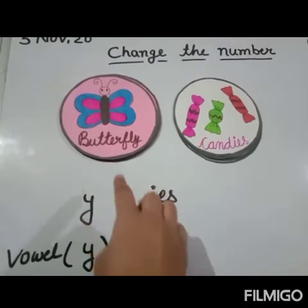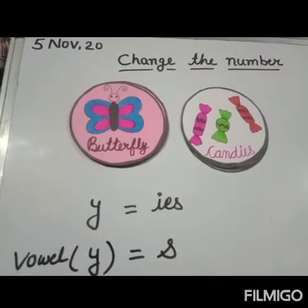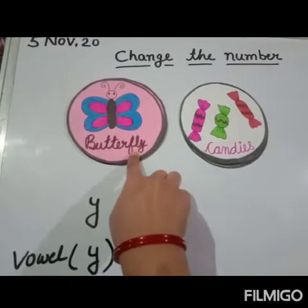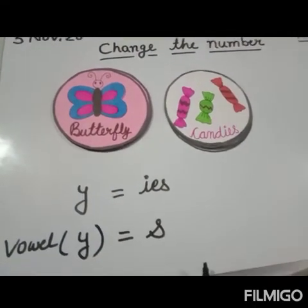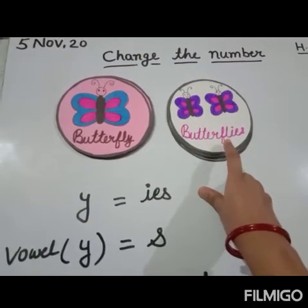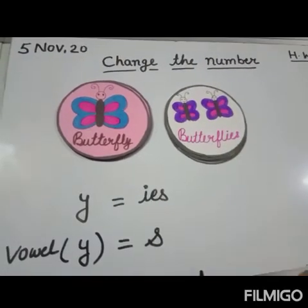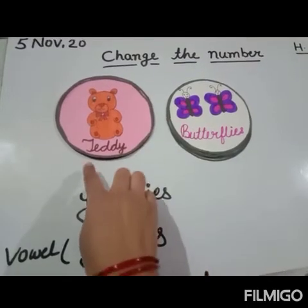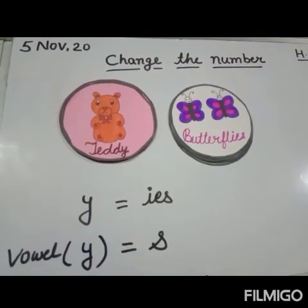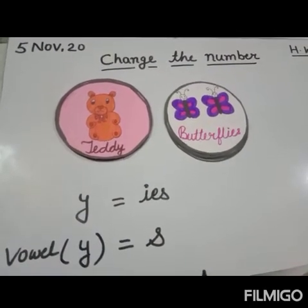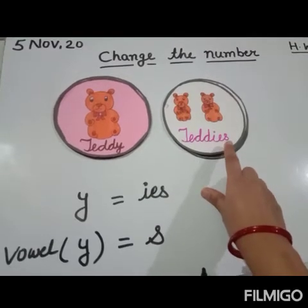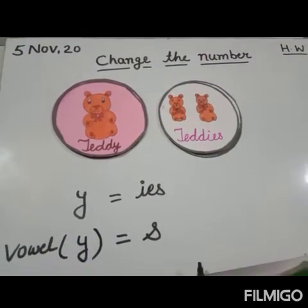Next is butterfly — B-U-double T-E-R-F-L-Y. Again, before Y there is a consonant sound, not a vowel sound, so we remove Y and add I-E-S. What does it become? Butterflies — B-U-double T-E-R-F-L-I-E-S. Next is teddy — T-E-double D-Y. Again, before Y there is a consonant sound, so what happens? Remove Y and add I-E-S. What does it become? Teddies — T-E-double D-I-E-S.